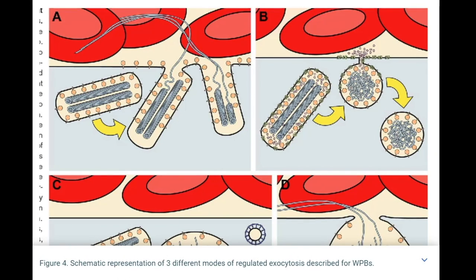Weibel-Palade bodies are only found in endothelial cells. These tiny bodies release stringy substances called von Willebrand factor, which allows for coagulation — it allows platelets and the clot to form together. When there's so much destruction of the endothelial cell, von Willebrand factor is released in high concentrations into the blood.